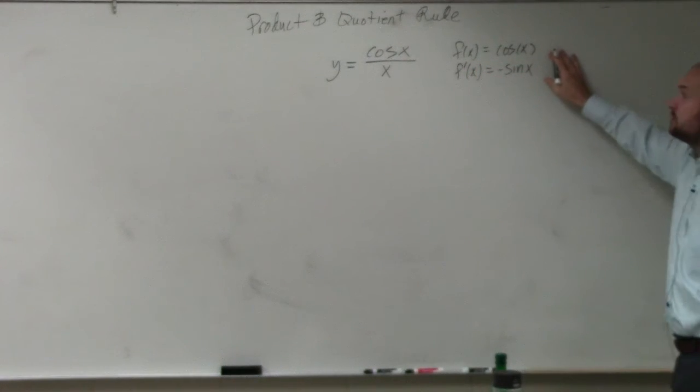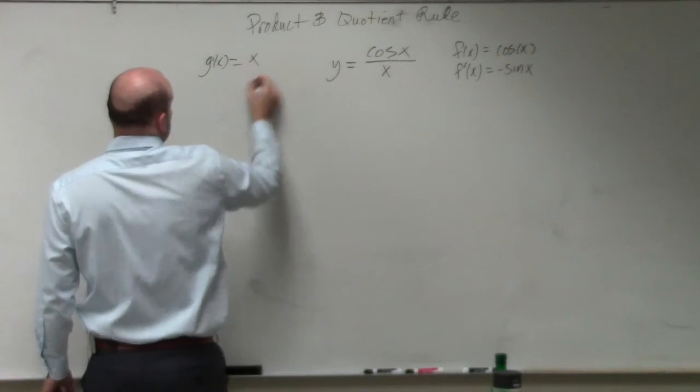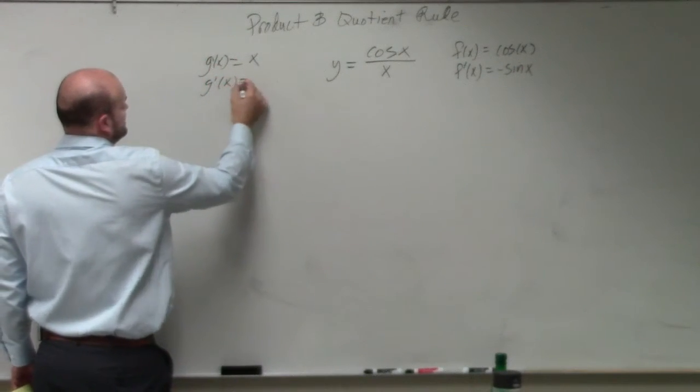We could say that g of x is my denominator, is equal to x. g prime of x is equal to 1.